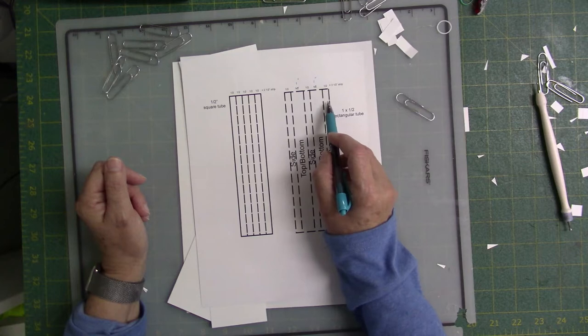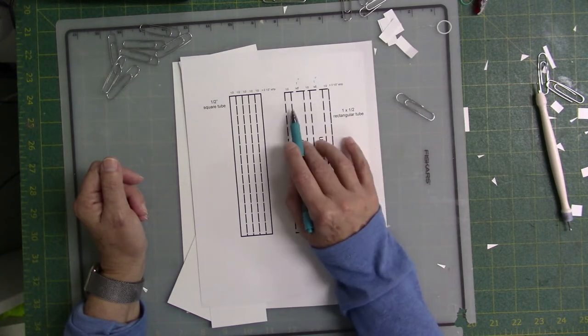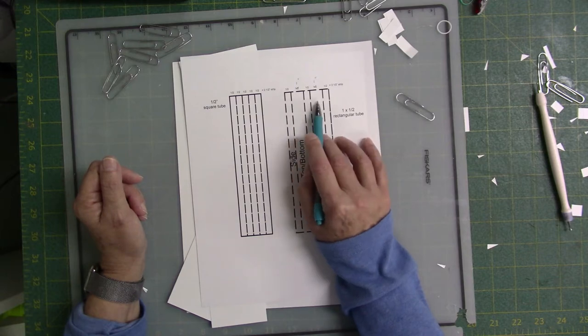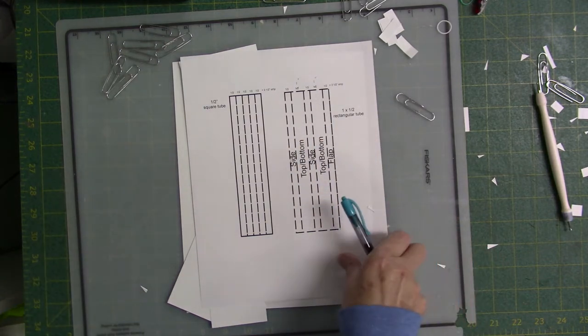And that's basically all there is to it. So every other fold line is going to be the same size. Like here I would have three half inch sections and two one inch sections. So it's very simple.